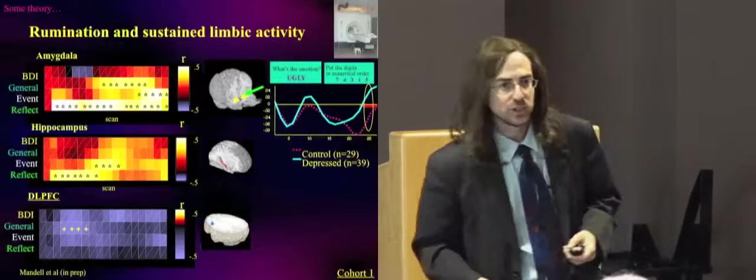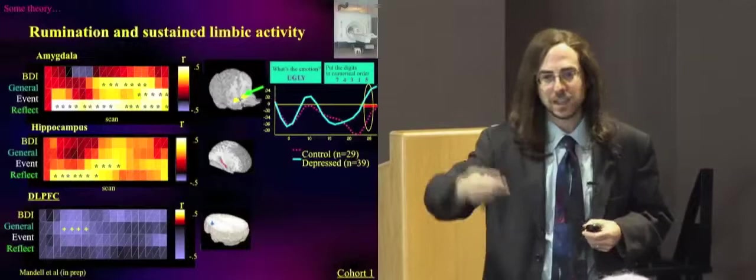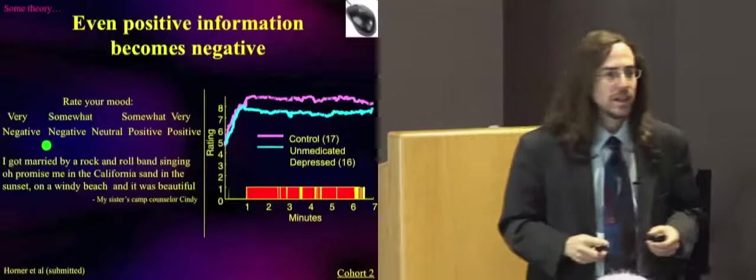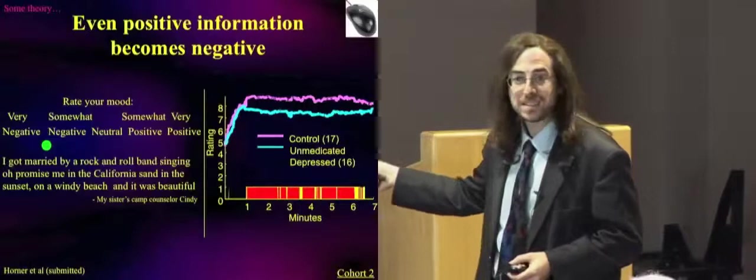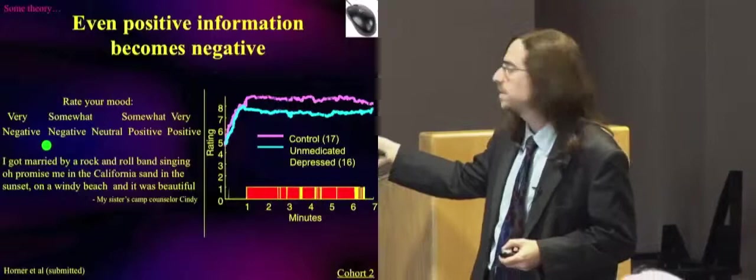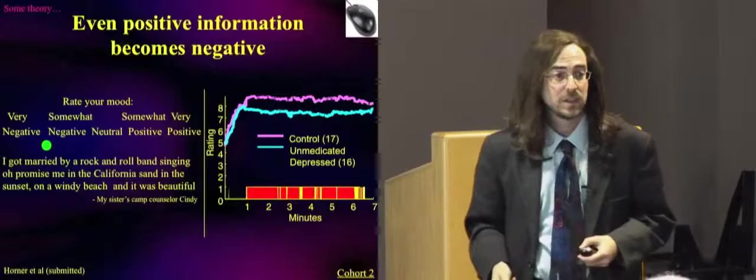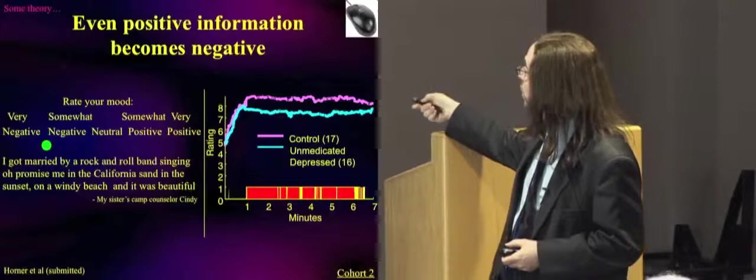So, so far, so good. More sustained amygdala activity, more like a ruminator. I should let you know that it's not just about negative information. We bring depressed people into the lab and say, think about the best time in your life. Think about the best time you ever had. Tell us about that. And while you're doing that for the next seven minutes, please rate your mood with a mouse from very negative to very positive. Now, healthy people, their mood goes up. This is their mouse rating and their mood goes up and they stay there for all seven minutes.